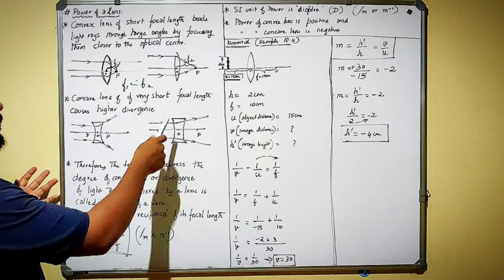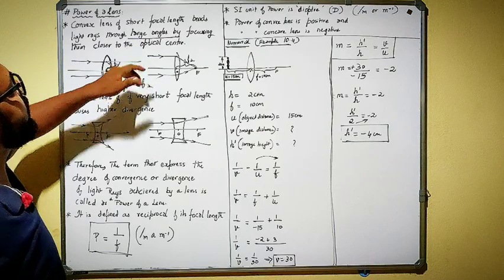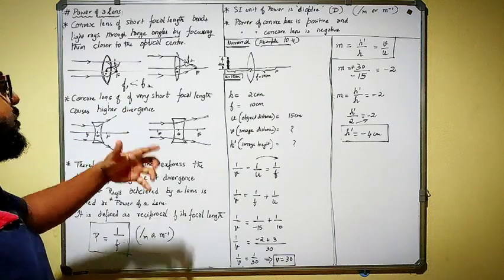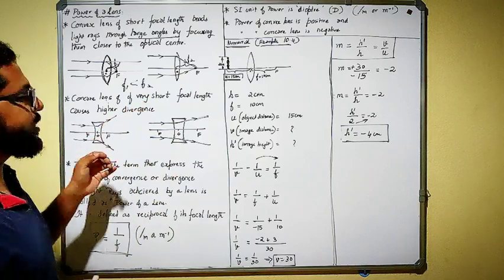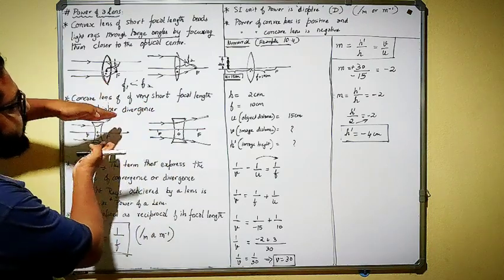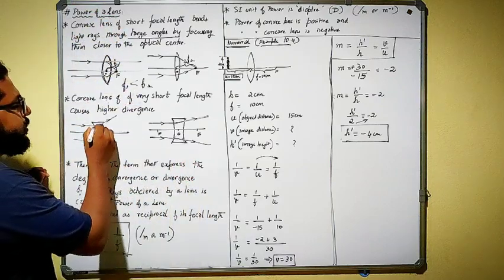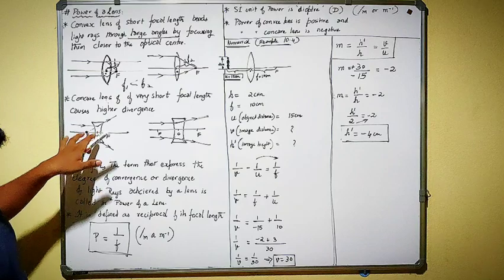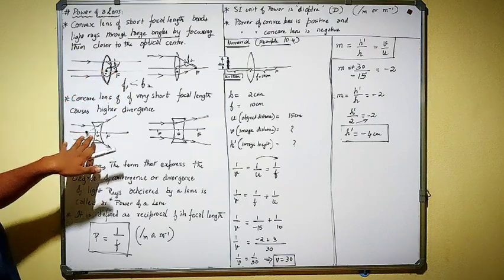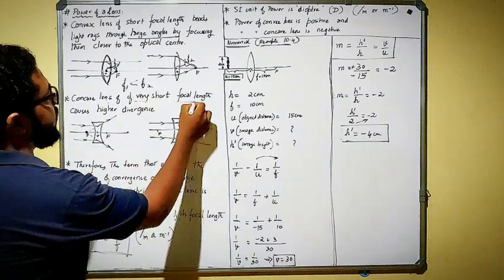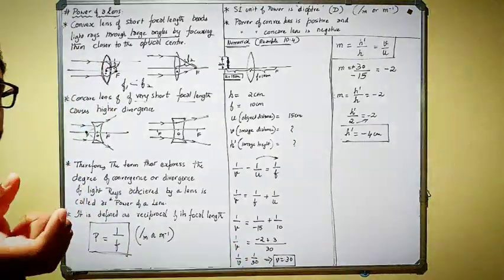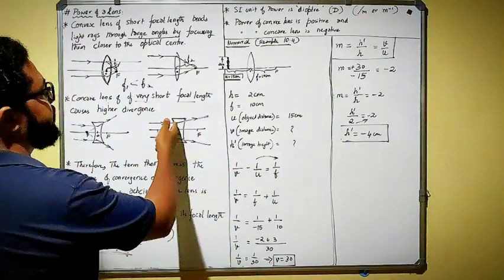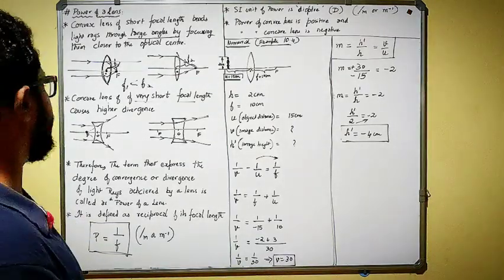In the case of a concave lens of very short focal length, it causes higher divergence. As you know, a convex lens is a converging lens whereas a concave lens is a diverging lens. If the focal length is short in the case of a concave lens, the divergence will be more. Similarly, a longer focal length means lesser divergence and the focal length will be much larger.